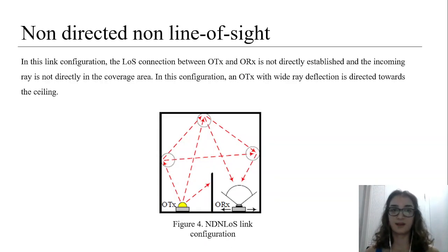Non-directed Non-Line of Sight: In this link configuration, Line of Sight connections between optical transmitter and optical receiver are not directly established and the incoming beam is not directly in the coverage area. This design is known as the diffuse link configuration. In this configuration, an optical transmitter with wide-beam deflection is directed towards the ceiling. Reflections from walls, ceilings, and objects are also used to connect with a large field-of-view optical receiver facing the ceiling, thereby communicating.